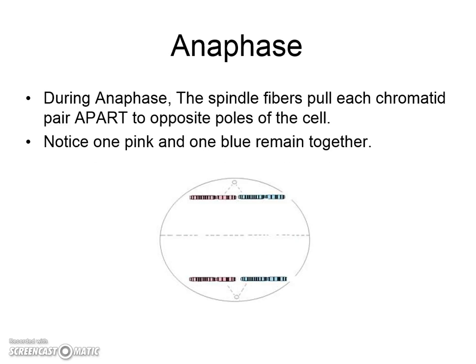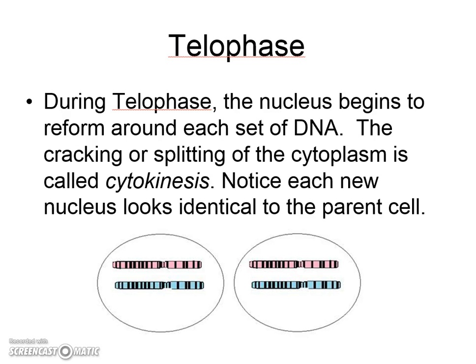Anaphase comes next — it is the third phase of mitosis out of four. 'Ana' means apart, so during anaphase chromosomes get pulled apart to opposite sides. Notice the line down the middle, sometimes called the equator or midline — that's right where the cell is going to pinch off and create two new nuclei at the end. Notice there's a pink and a blue one on each side.